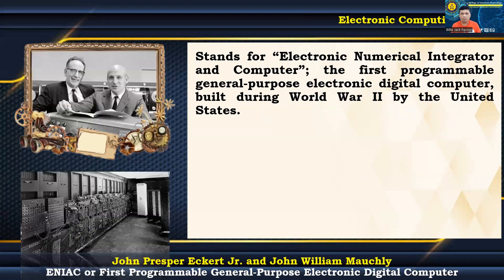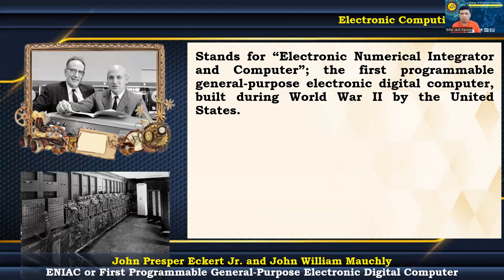ENIAC stands for Electronic Numerical Integrator and Computer — the first programmable general-purpose electronic digital computer, built during World War II by the United States. It was the first large-scale computer to run entirely on electrical components without any mechanical elements. It was planned to be a modular computer comprised of multiple panels carrying out distinct duties. It could perform operations on 10-digit integers at 5,000 cycles per second with a 100 kHz clock, while the fundamental machine cycle was 200 microseconds long.